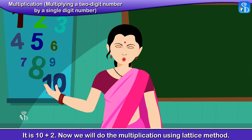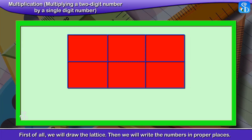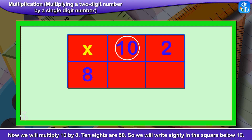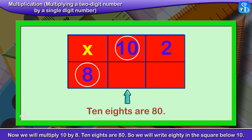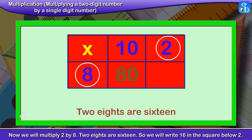Now, we will do the multiplication using the lattice method. First, we will draw the lattice. Then, we will write the numbers in proper places — we write the expanded form of 12. Now, we will multiply 10 by 8: 10 eights are 80, so we write 80 in the square below 10. Then, we multiply 2 by 8: 2 eights are 16, so we write 16 in the square below 2.